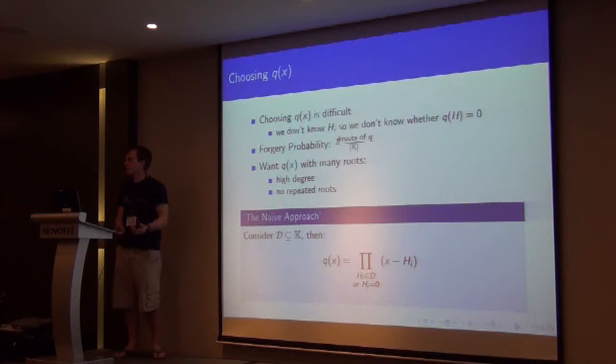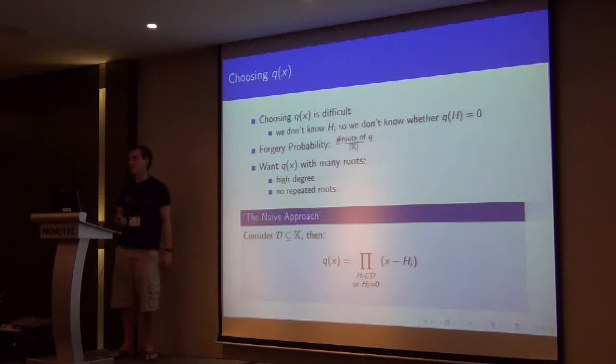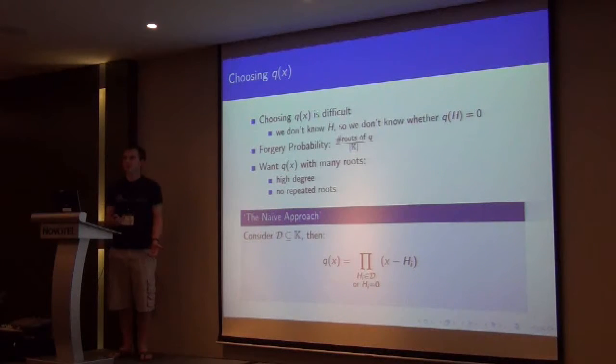So we can just sort of cross our fingers and hope, and say that there's some number of roots of q, and our forgery is successful if the hash key is one of those. And there's, you know, the size of the field, possible hash keys, so there's our probability. And this suggests that what we would like is for q of h to have lots of roots, so we get a higher forgery probability.